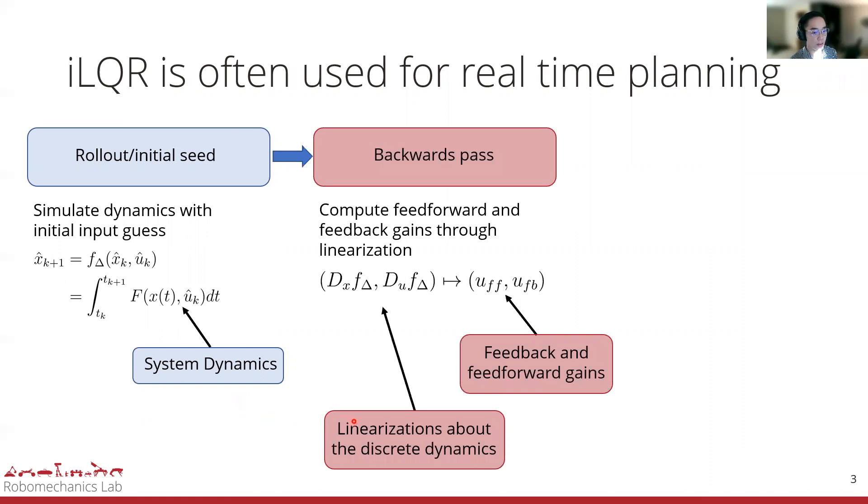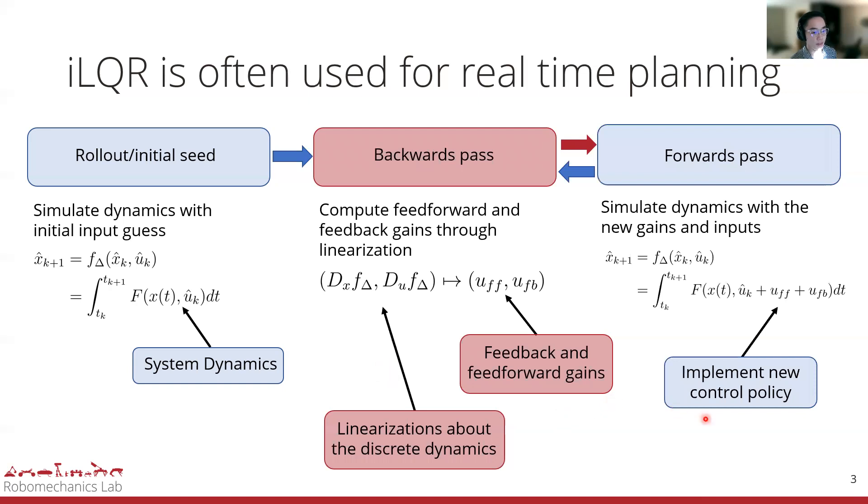On a backwards pass, we linearize the trajectory at each time step and create a local control policy which contains a feedback and feedforward term. This new policy is implemented on the forwards pass where, again, the system dynamics are simulated. This cycle of backwards and forwards pass is repeated until convergence.